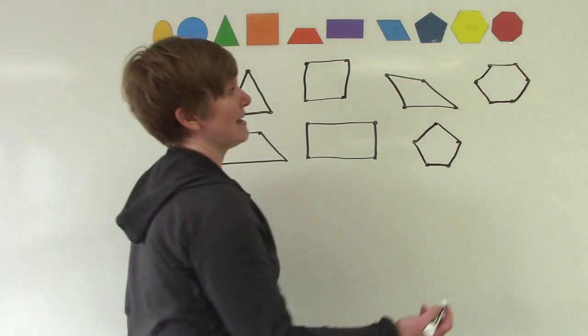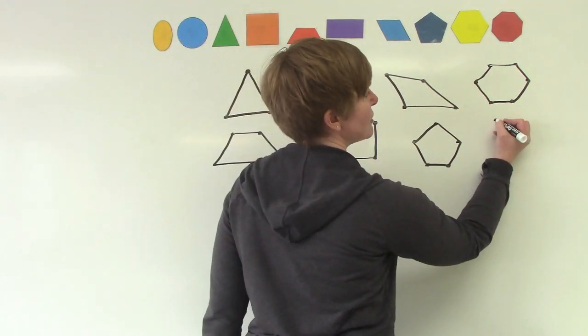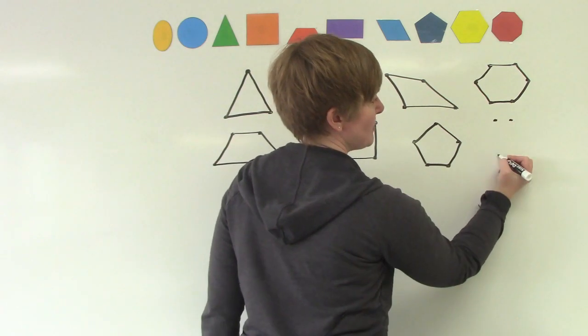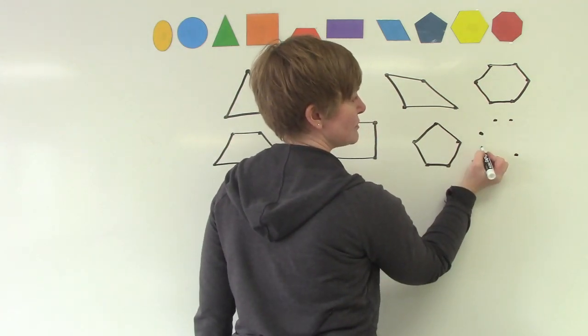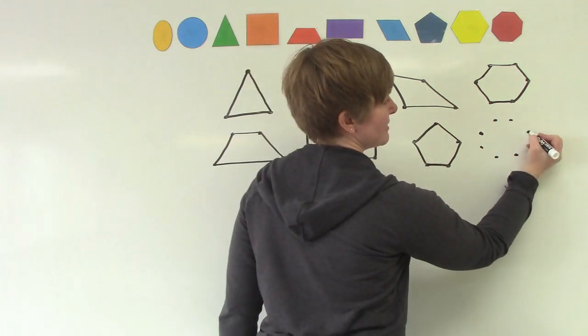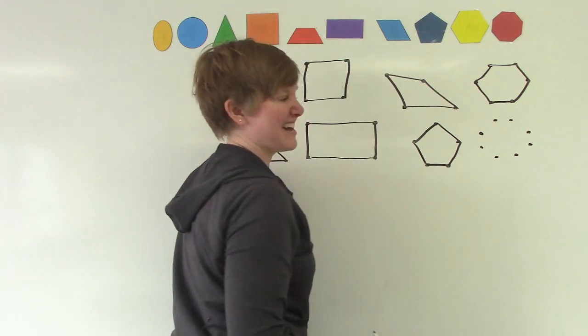Let's try drawing one. It's going to have two dots on the top, two dots on the bottom, two dots on this side, and two dots on that side.